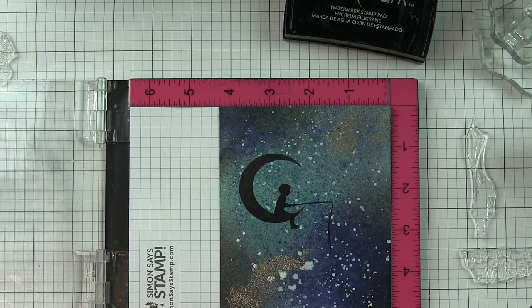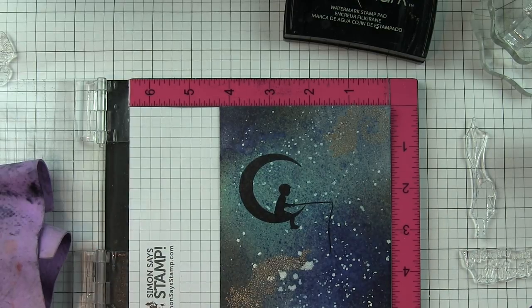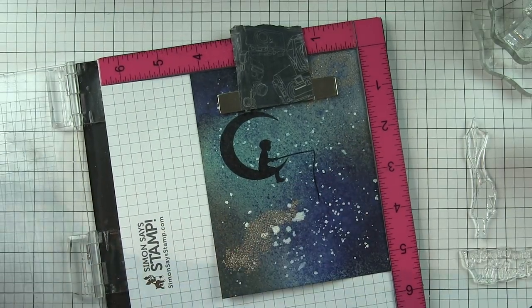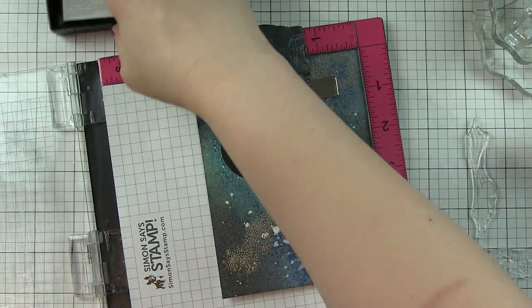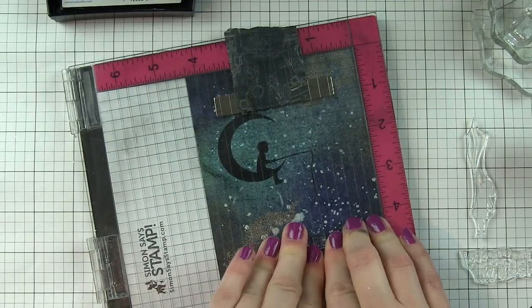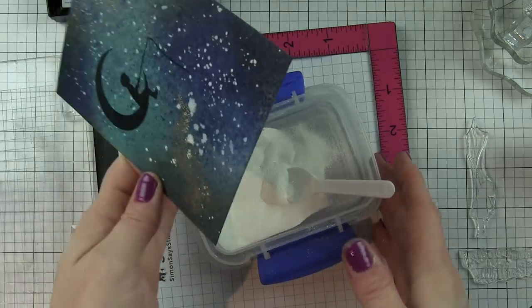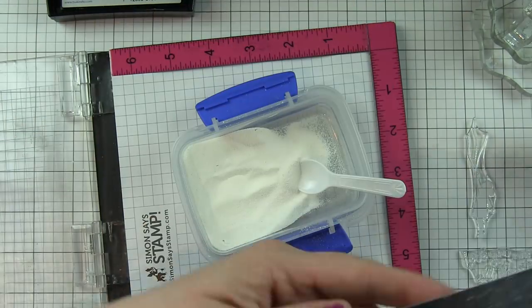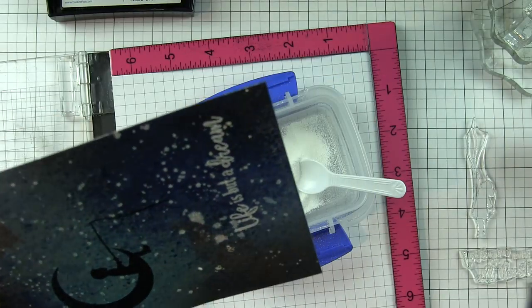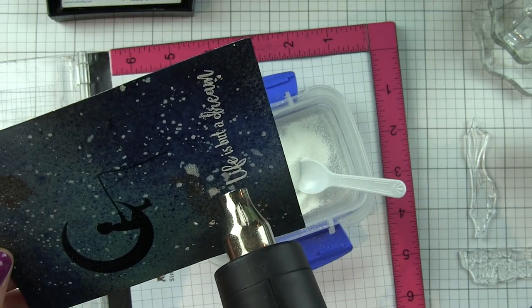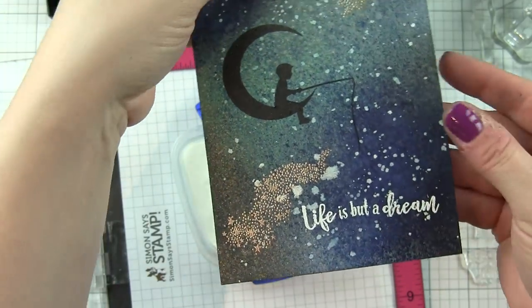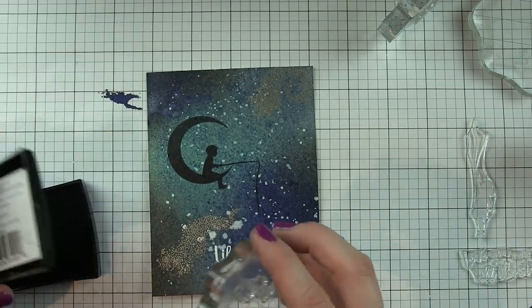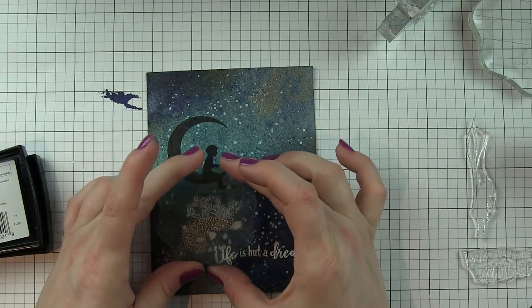Next I'm going to go ahead and stamp that silhouette image. I'm using the MISTI in the event that it doesn't stamp really dark the first time. I wanted the ability to stamp it again if I needed to because that image needs to be a nice solid black. Then I stamped the greeting. I want to make sure that that takes prominence. I stamped that with VersaMark and heat set that with the white embossing powder. So the night sky image is really starting to take shape.